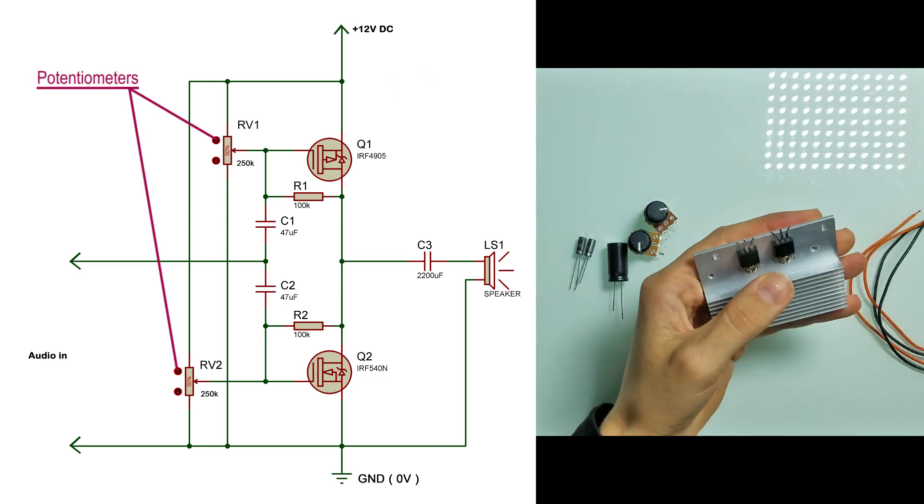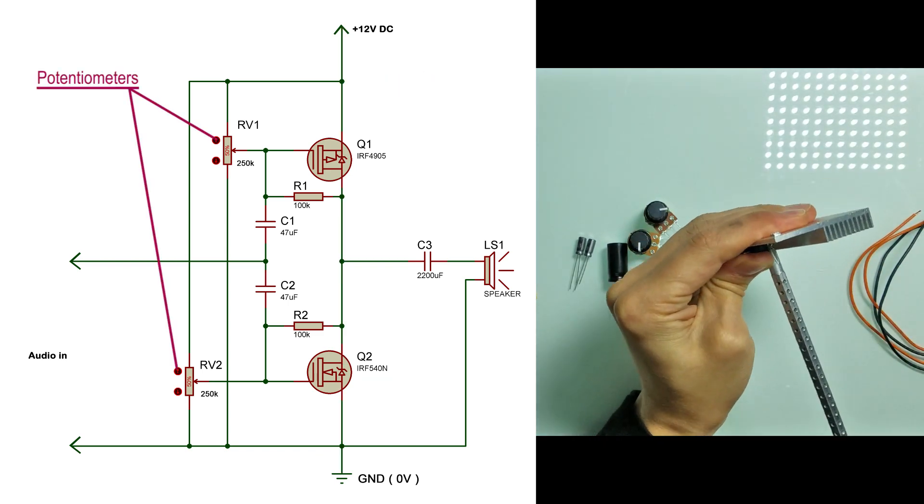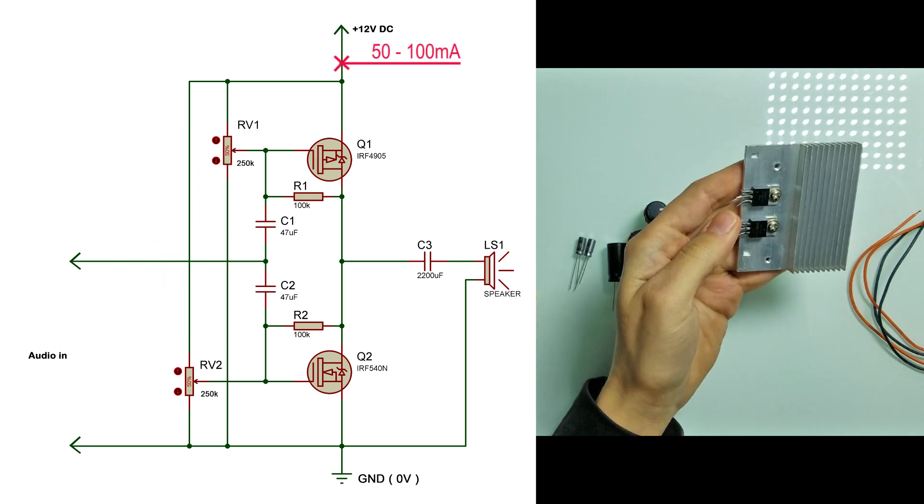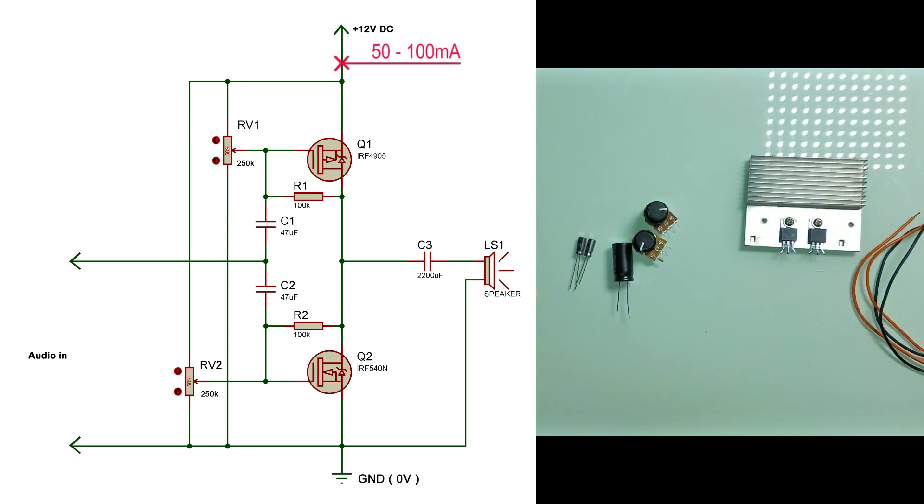Two potentiometers are used to control each MOSFET. My goal is to set low quiescent current, about 50 to 100 milliamps. But at the same time both MOSFETs should be equally on, so I should have half of the voltage of my power supply between drains and ground.